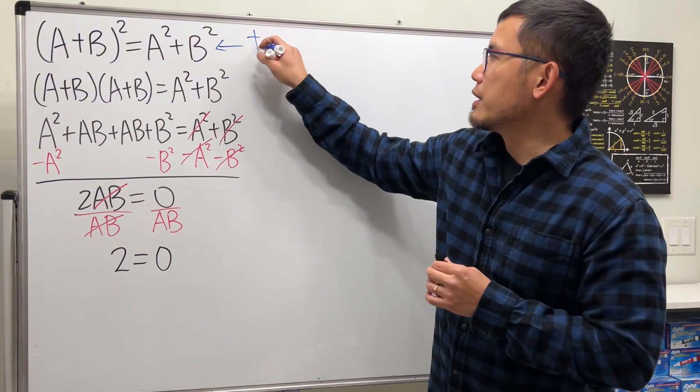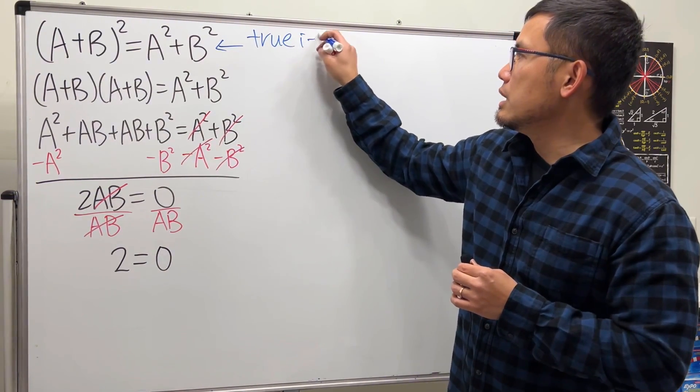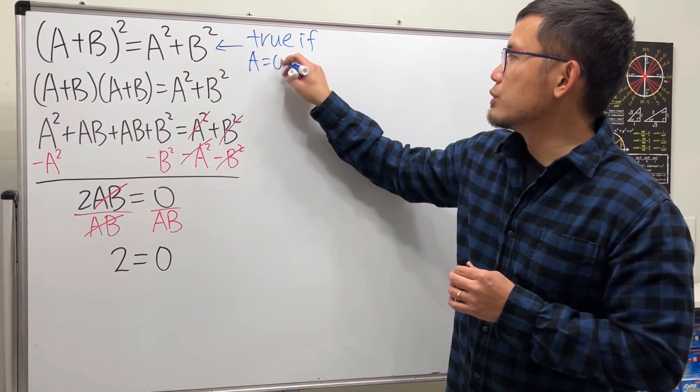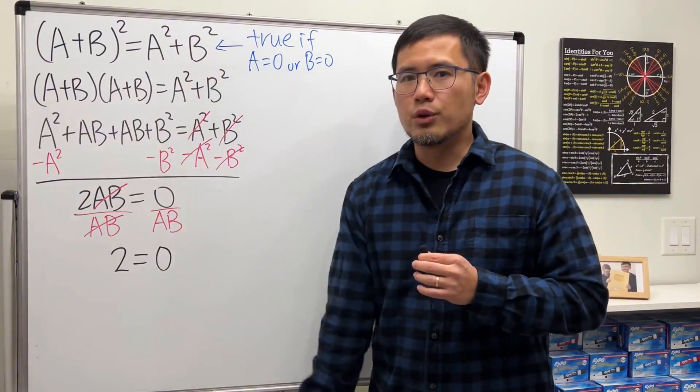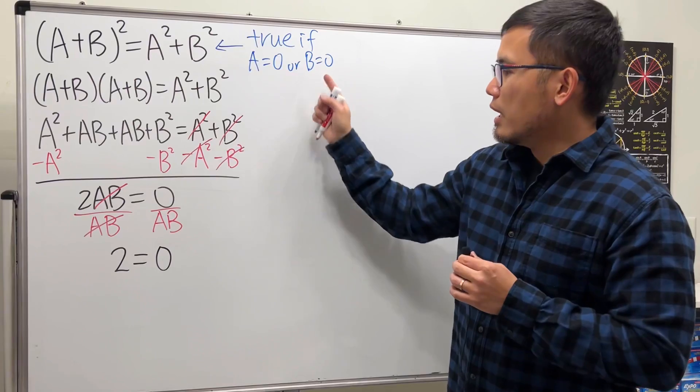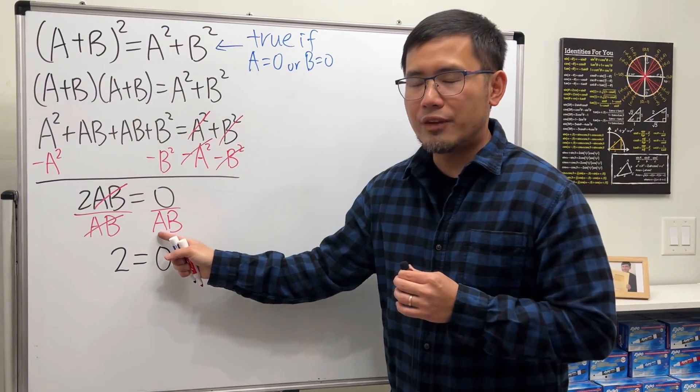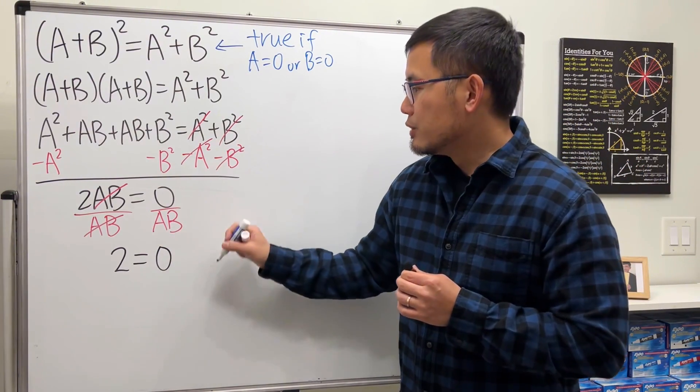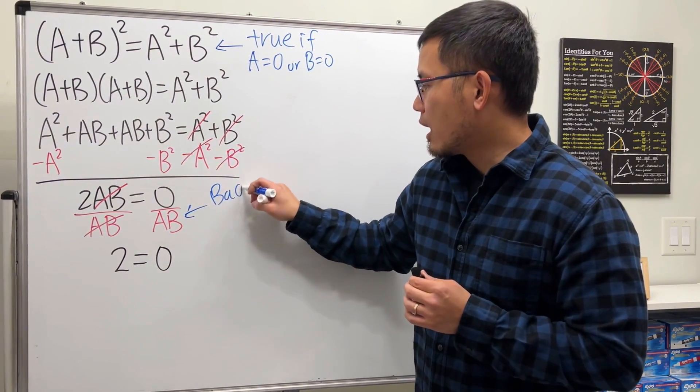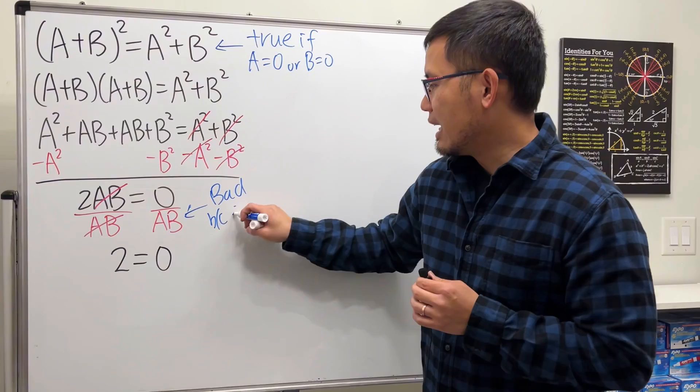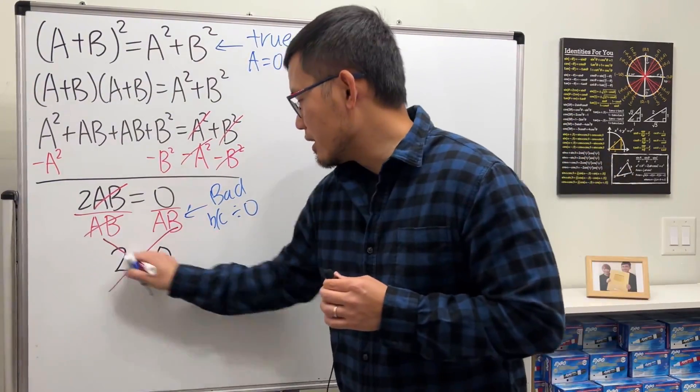So right here, I will just tell you, this right here is true if a equals 0 or b equal to 0. Of course, you can plug it in and you can verify that. Either case, though, you see right here, we have a times b on the bottom, so this is bad because we are dividing by 0. So this right here is not correct.